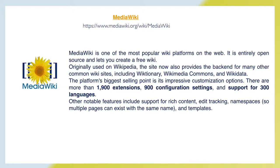MediaWiki is one of the most popular wiki platforms on the web. It is entirely open source and lets you create a free wiki. Originally used on Wikipedia, the site now also provides the backend for many other common wiki sites, including Wiktionary, Wikimedia Commons, and Wikidata. The platform's biggest selling point is its impressive customization options: more than 1900 extensions, 900 configuration settings, and support for 300 languages. Other notable features include rich content support, edit tracking, namespaces so multiple pages can exist with the same name, and templates.